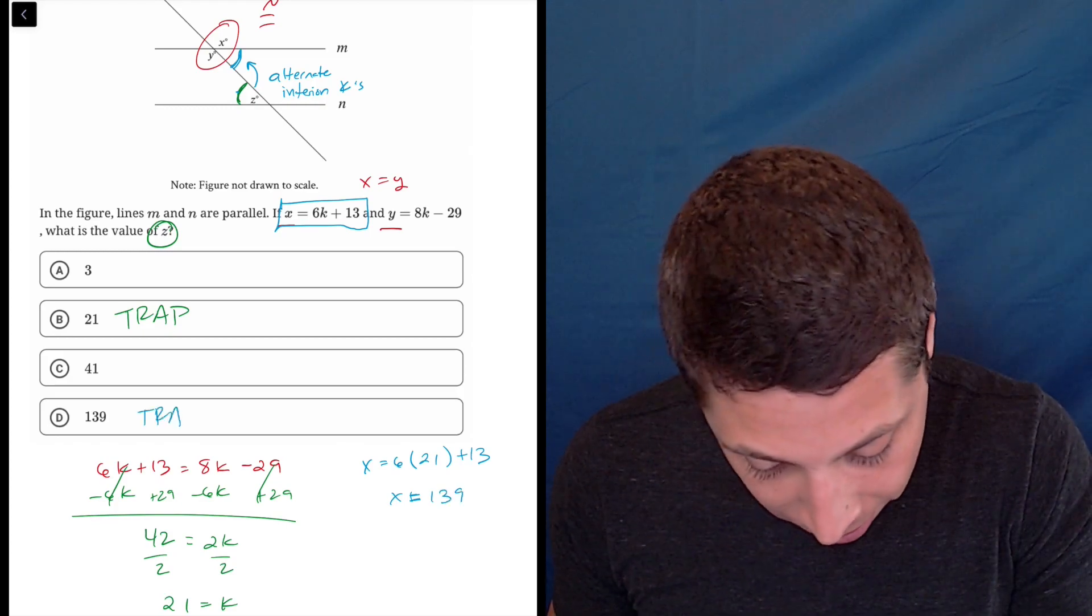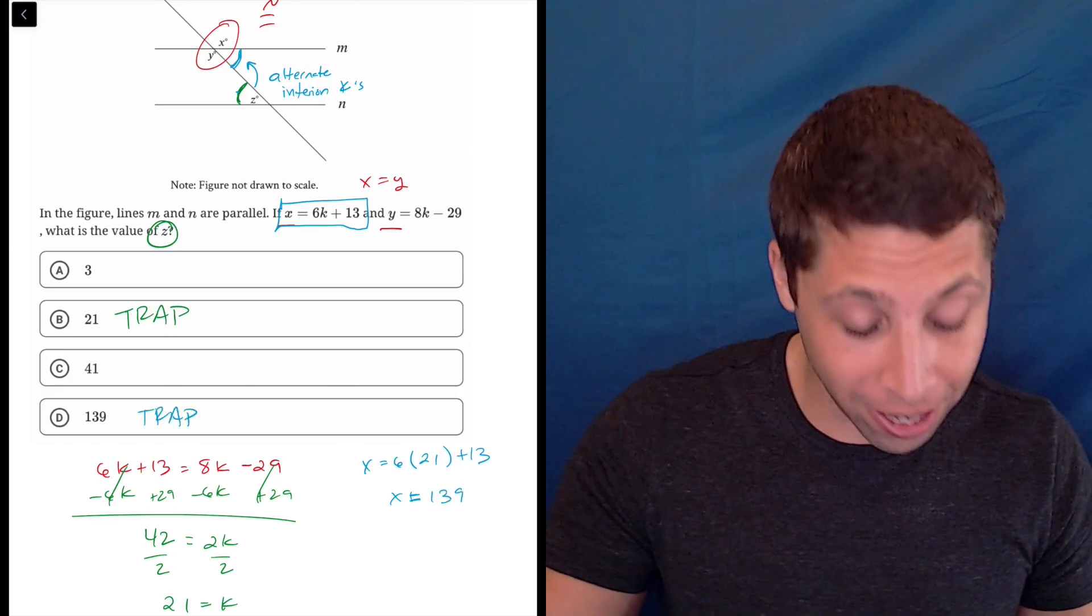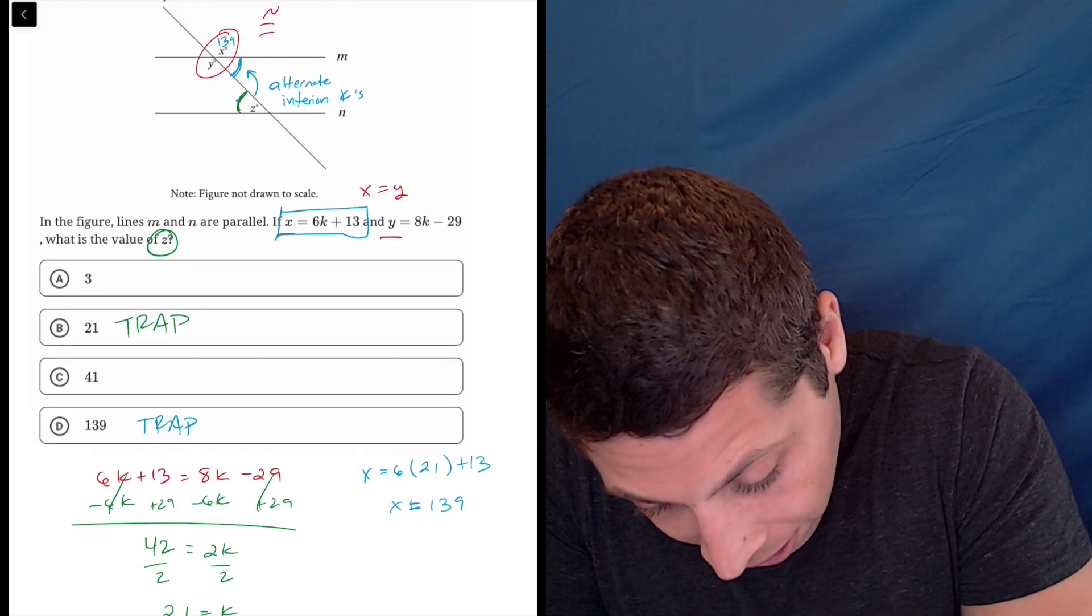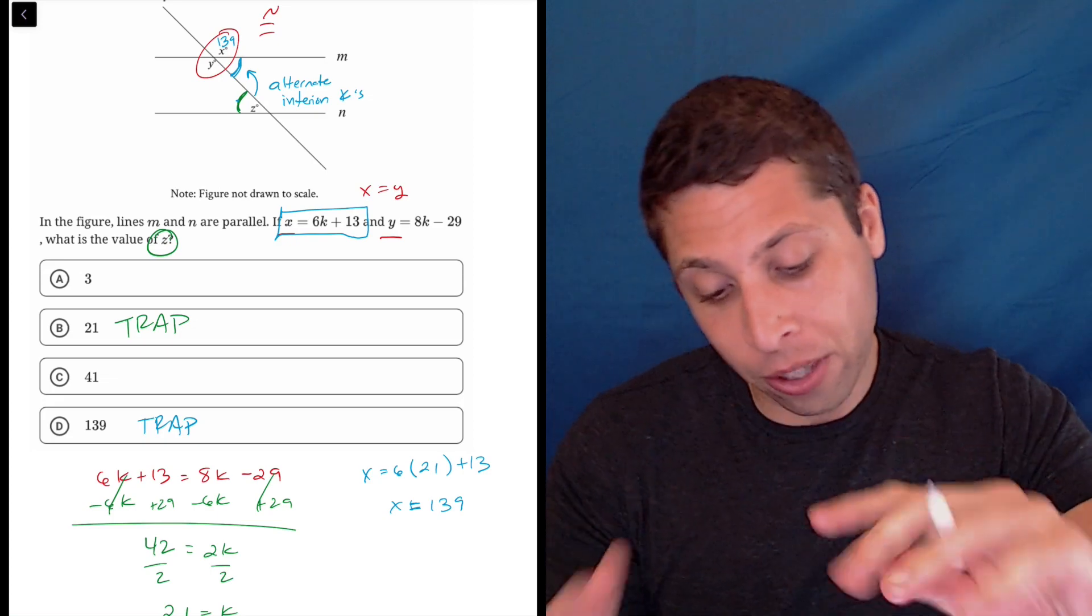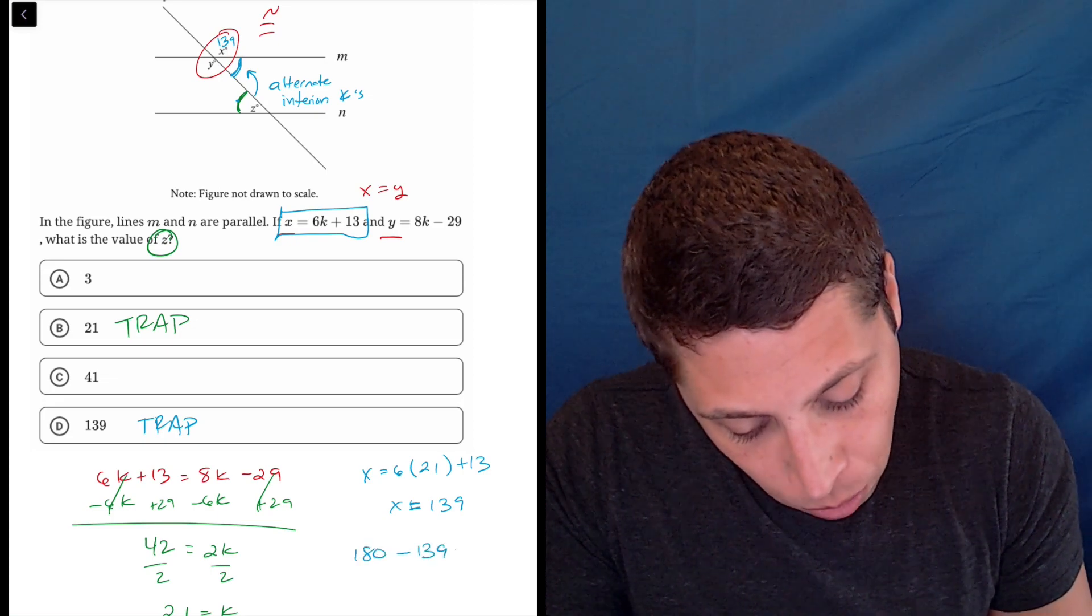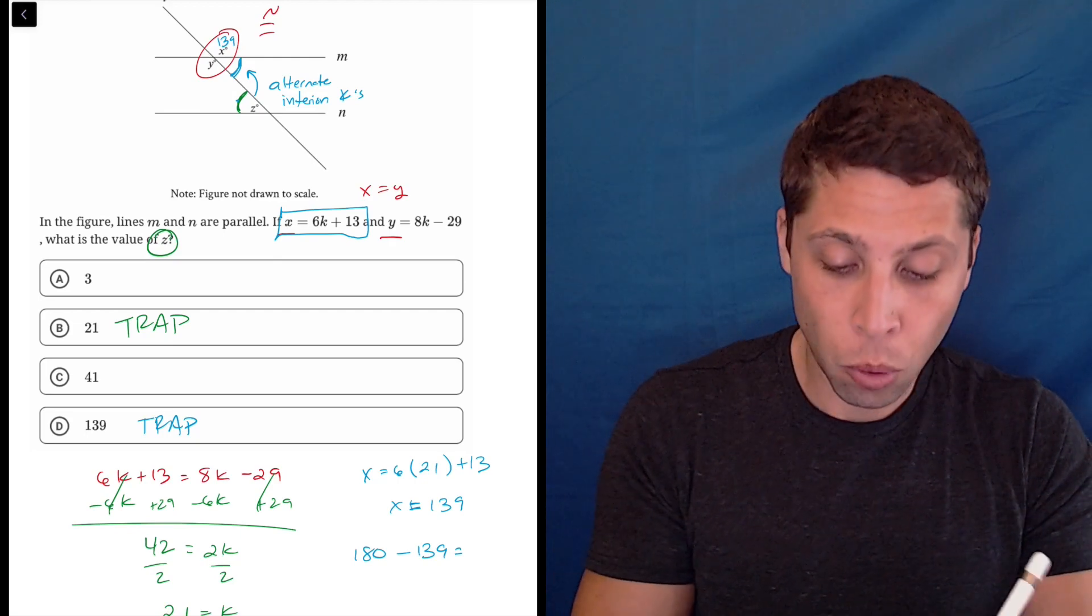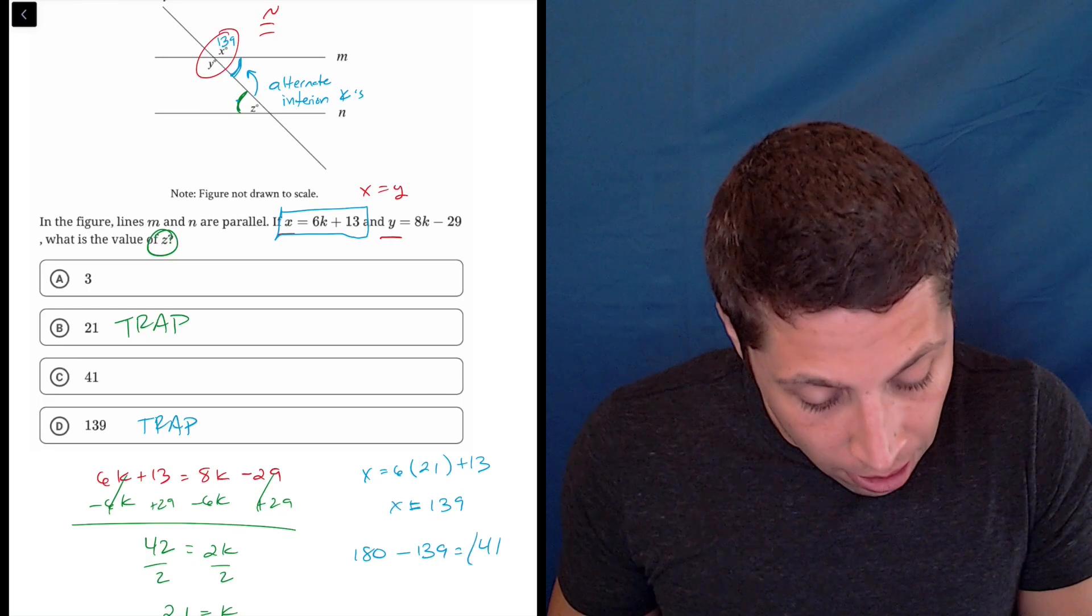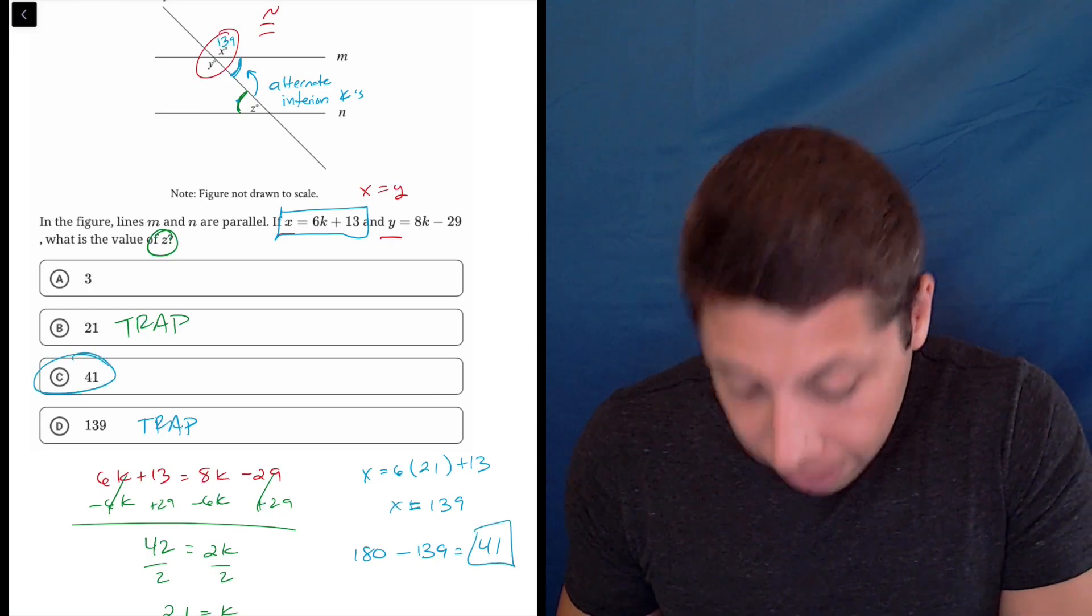Notice another trap, right? It's another answer. But we don't want that. We want to get, if this is 139, then Z is going to be supplementary to that. So we just take 180 and we minus the 139, 180 minus 139 is 41. And that finally is the answer.